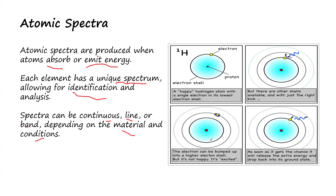When an electron is excited, it moves from the lower energy level — the initial energy level — and jumps to another energy level. As soon as it gets the chance, it will release the extra energy and drop back into its ground state. When electrons move from one shell to another, they are excited, and whenever they get the chance, they release the extra energy and drop back to their original state. This movement of electrons from one shell to another is what actually leads to producing a spectra, depending on the type of element.